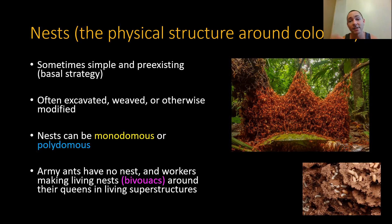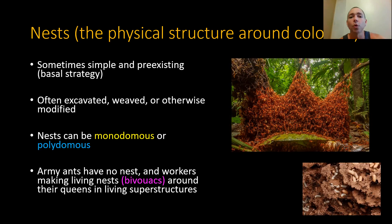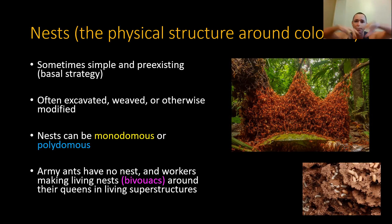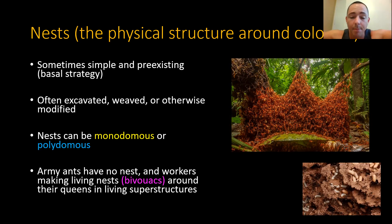They also have the central place foraging problem resolved somewhat by having many central places, so they often have shorter distances to their resources. But there's increased risk from transporting brood, queens, and workers between those nests when splitting the colony. Oftentimes they're episodically polydomous — some species expand out and have many nests during the summer, then contract to a single nest during winter, then expand out again during summer and retract back to a monodomous nest in winter.